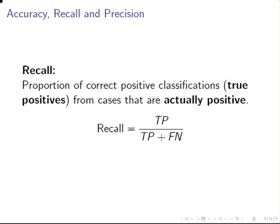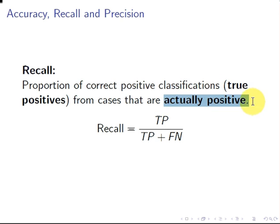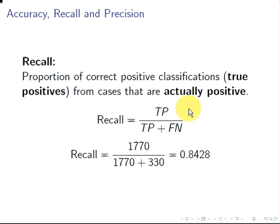Recall is the total number of correct positive classifications — true positives — from the number of cases that are actually positive. Remember, false negatives are actually positive but predicted to be negative. We have 1,770 true positives, and the total number of actual positives is 1,770 plus 330. Working it out, the recall is 0.8428.